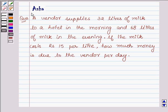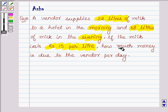Hi and welcome back to the session. So today we are going to solve this problem which says a vendor supplies 32 litres of milk to a hotel in the morning and 68 litres of milk in the evening. If the milk costs Rs 15 per litre, how much money is due to the vendor per day?